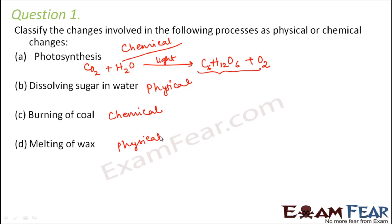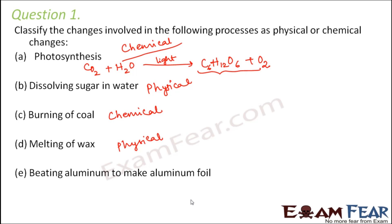Melting of wax is also a reversible change, so it is a physical change. Beating aluminium to make aluminium foils — when we beat aluminium we are only changing its shape. The physical property changes but chemically it is still the same, so this is again a physical change.